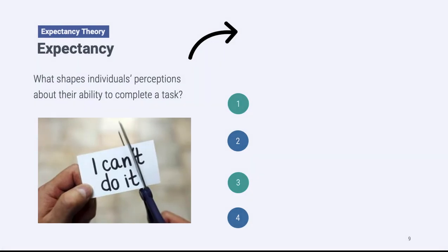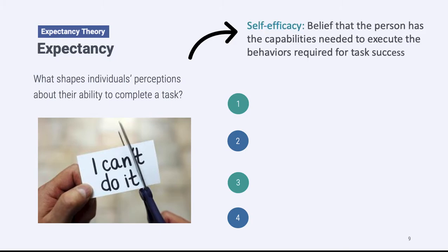What shapes whether someone perceives they are able to complete a task? There is a variable called self-efficacy, defined as the belief that a person has the capabilities needed to execute the behaviors required for task success. If a person has high self-efficacy — they believe they're able to execute the behaviors needed for a given assignment — then they're going to have high expectancy and believe they have the ability to do what's being asked of them.